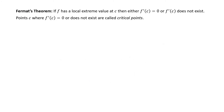Fermat's Theorem: if f has a local extreme value at c, then either the derivative evaluated at c equals zero, or the derivative evaluated at c does not exist. Points c where the derivative equals zero or does not exist are called critical points.